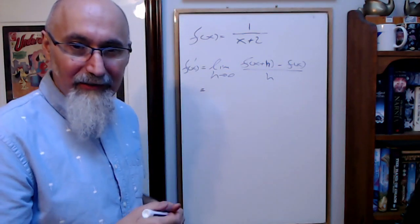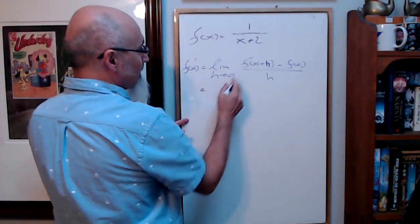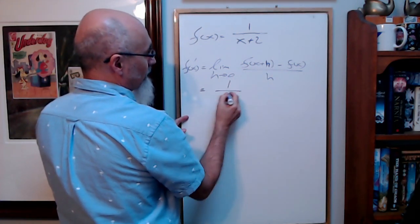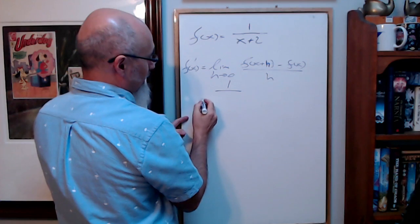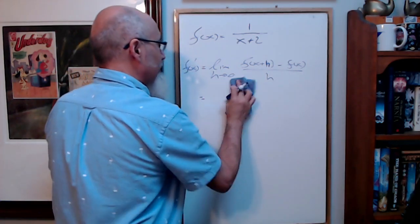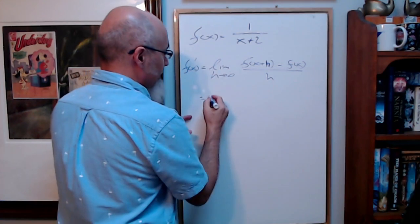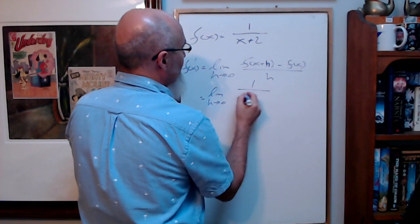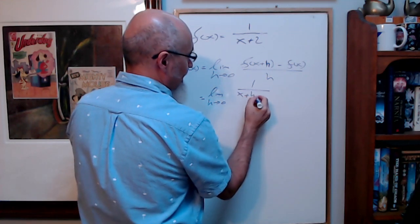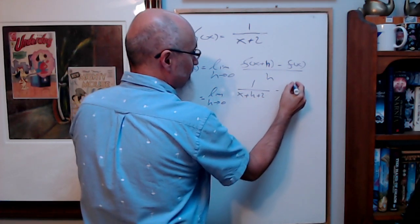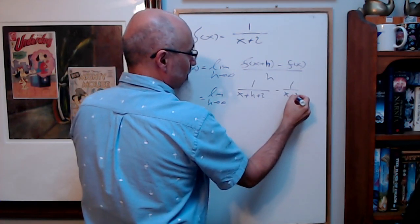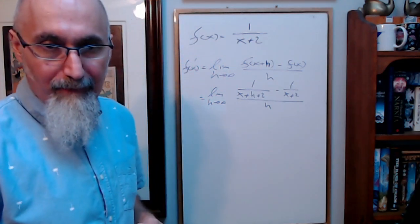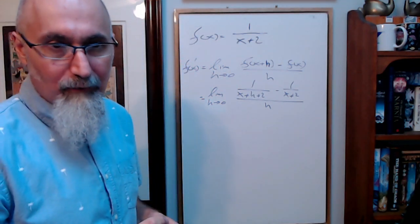So let's plug that in. F of x plus h is one over — we've got to write down the limit too. Limit as h approaches zero of one over x plus h plus two, minus one over x plus two, all over h.